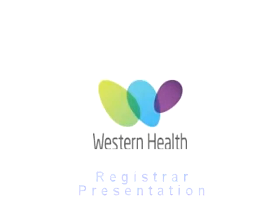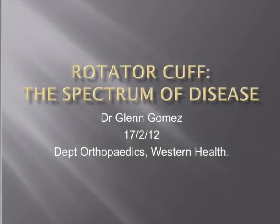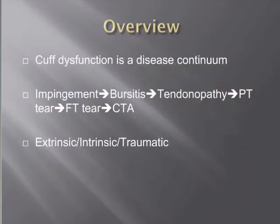I decided to give a little talk on rotator cuff disease and the spectrum of disease, all the way from impingement through to cuff tear arthropathy. Cuff dysfunction is a disease of continuum. You start at the earlier, more mild end of the spectrum with subacromial impingement, going through to bursitis, tendinopathy, partial thickness tears, full thickness tears, and in a certain proportion of people, onto cuff tear arthropathy.